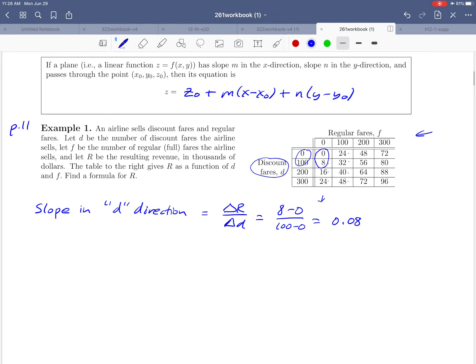We've just calculated the slope in the D direction. If we go up to the formula that we derived up here, you can think of that 0.08 as being the M in that formula. Normally, that's the slope that goes with X, but D is the variable name that we've got. So there's M.